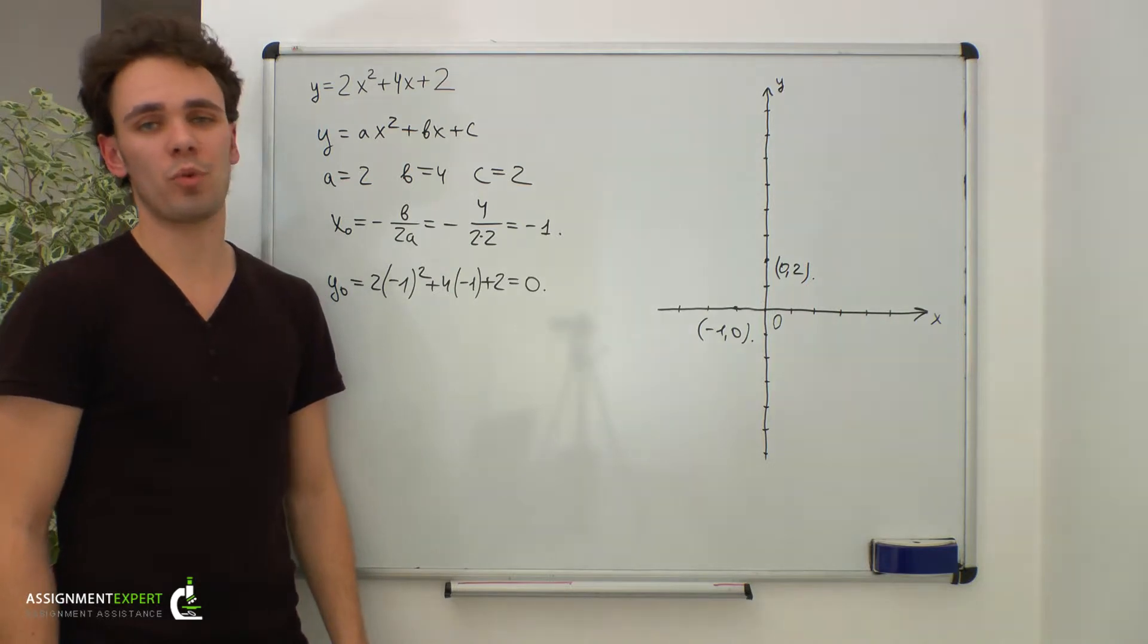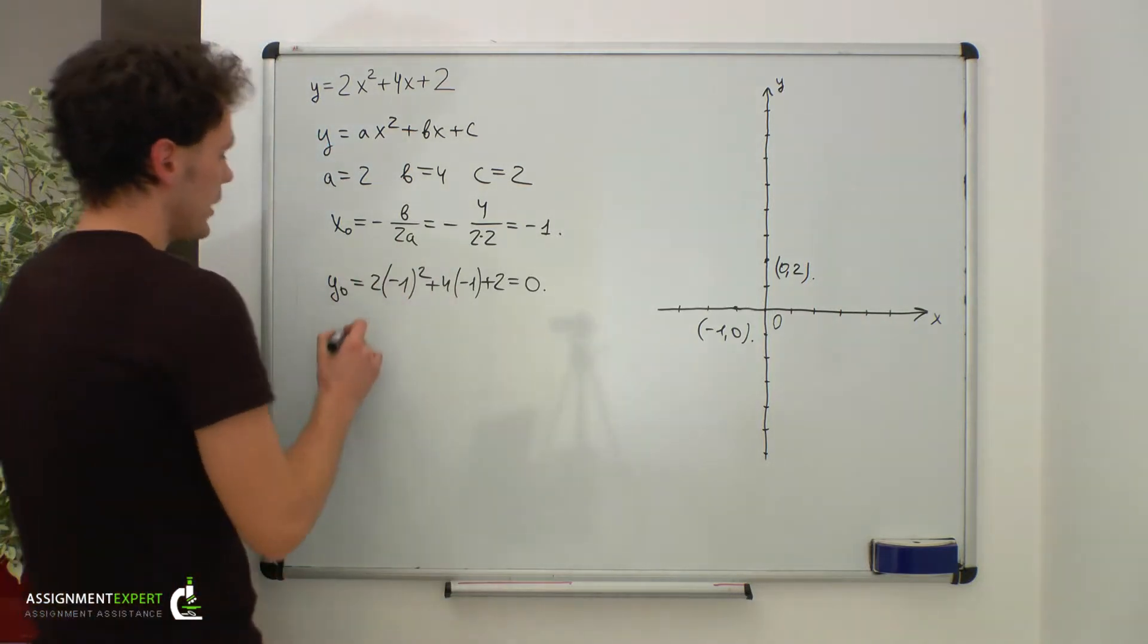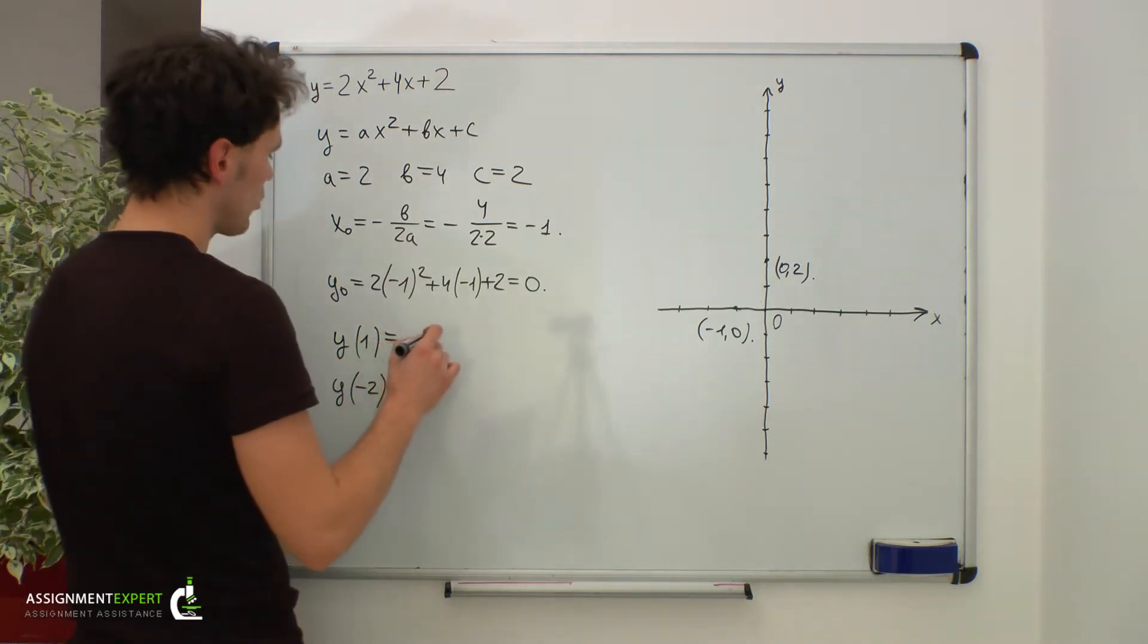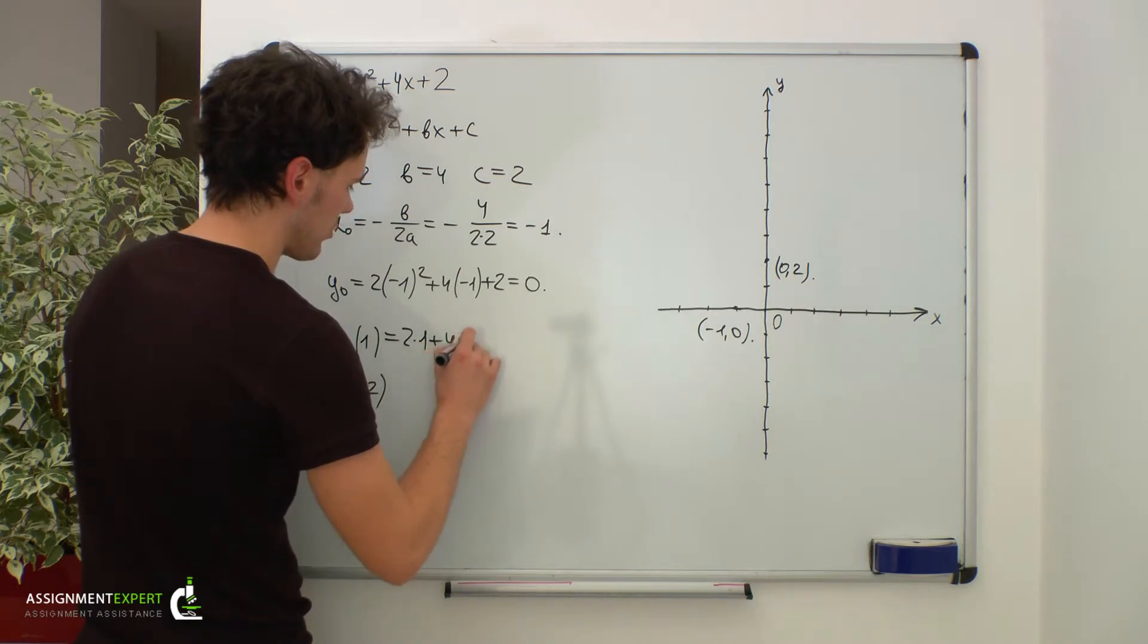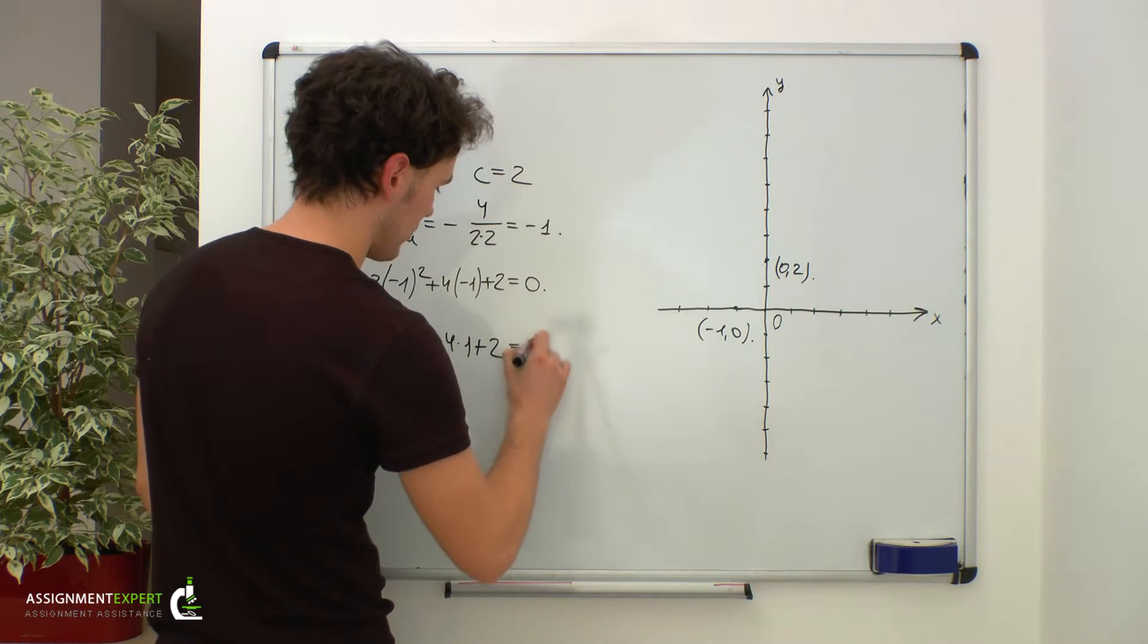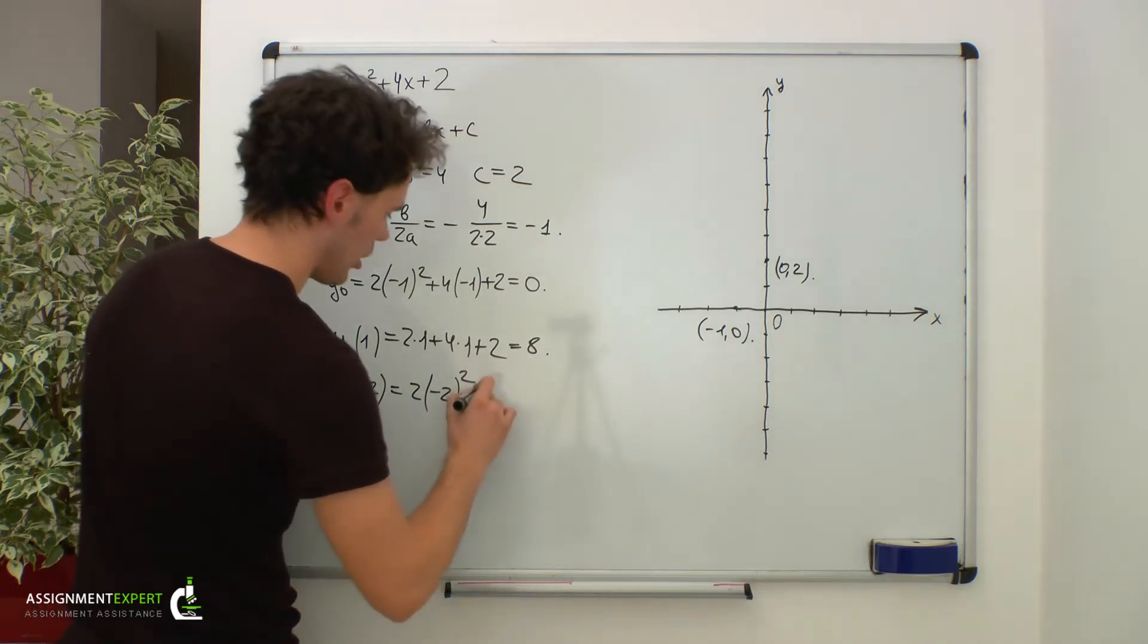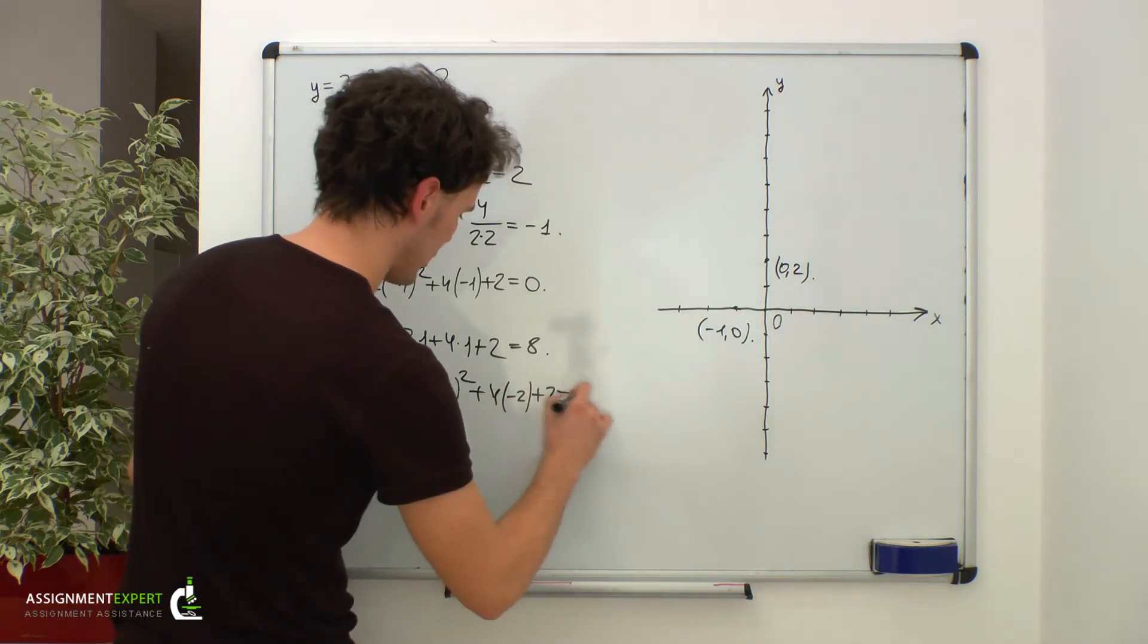Now we need to find a few more points to properly build our parabola. Let's calculate y for 1 and y for negative 2. y of 1 is equal to 2 times 1 plus 4 times 1 plus 2 and this is equal to 8. y of negative 2 equals 2 times negative 2 squared plus 4 times negative 2 plus 2 and equals 2.